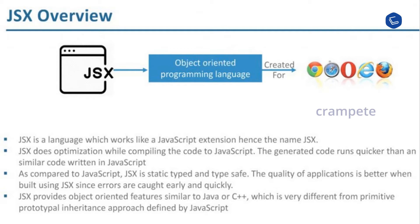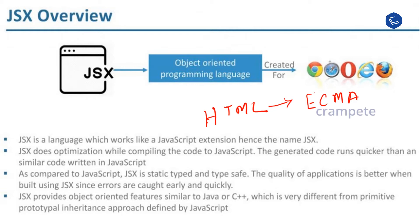JSX is a language which works like a JavaScript extension, hence the name JSX. It is a React extension which allows writing JavaScript code that looks like HTML. JSX is an HTML-like syntax used by React that extends ECMAScript, so that HTML-like syntax can co-exist with React code. This syntax is used by preprocessors, that is transpilers like Babel, to transform the HTML-like syntax into standard JavaScript objects that a JavaScript engine will parse.